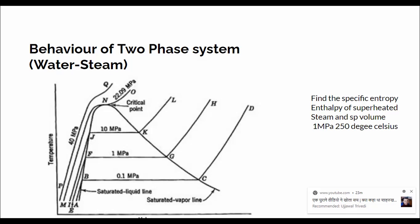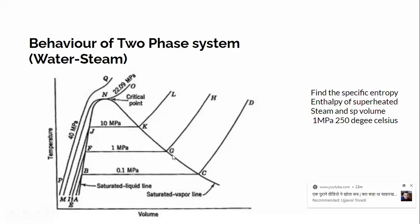If you figure this out from the chart — this is 1 megapascal — the saturation temperature here would be 180 degrees centigrade. The temperature of the given steam is 250 degrees centigrade, so it lies further along: 190, 200, up to 250. This means the steam lies in the superheated region, and we can extract its properties from the superheated steam tables.